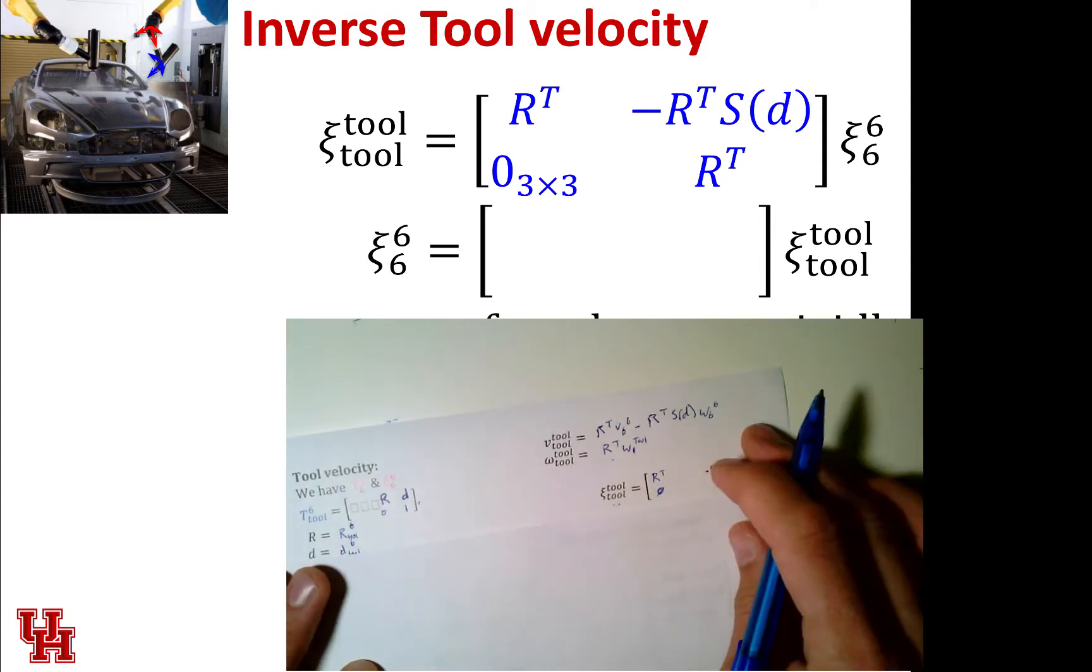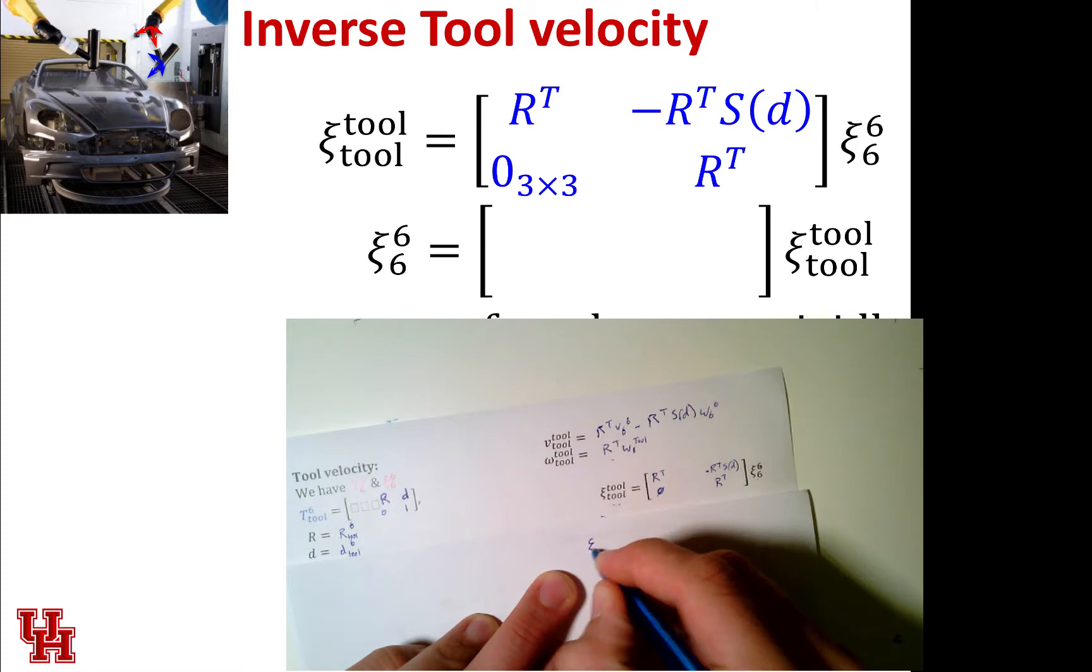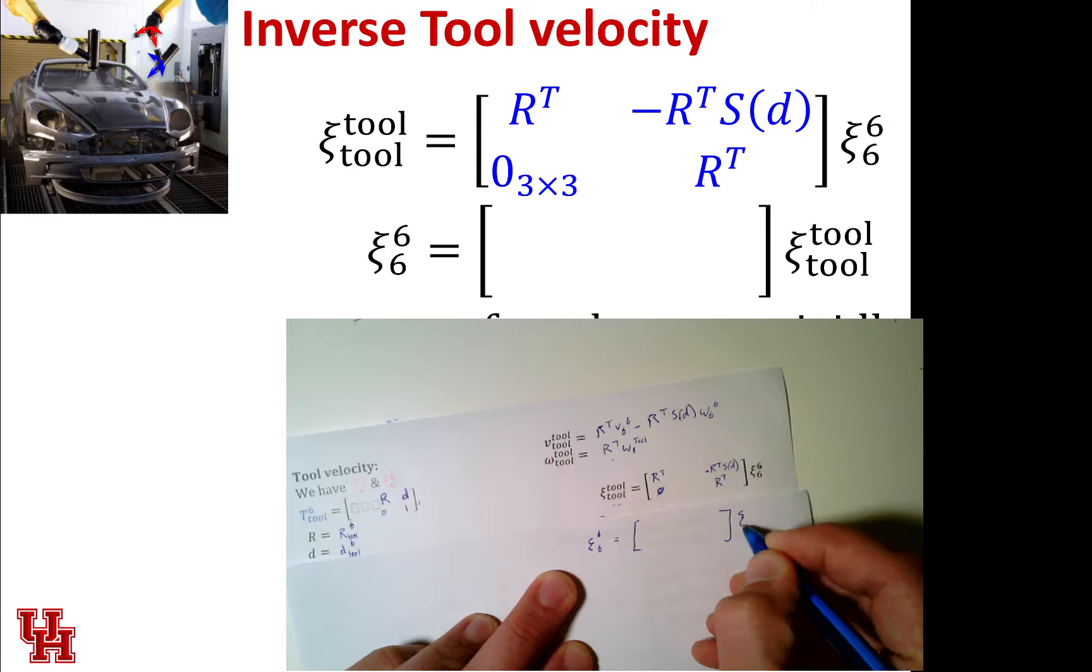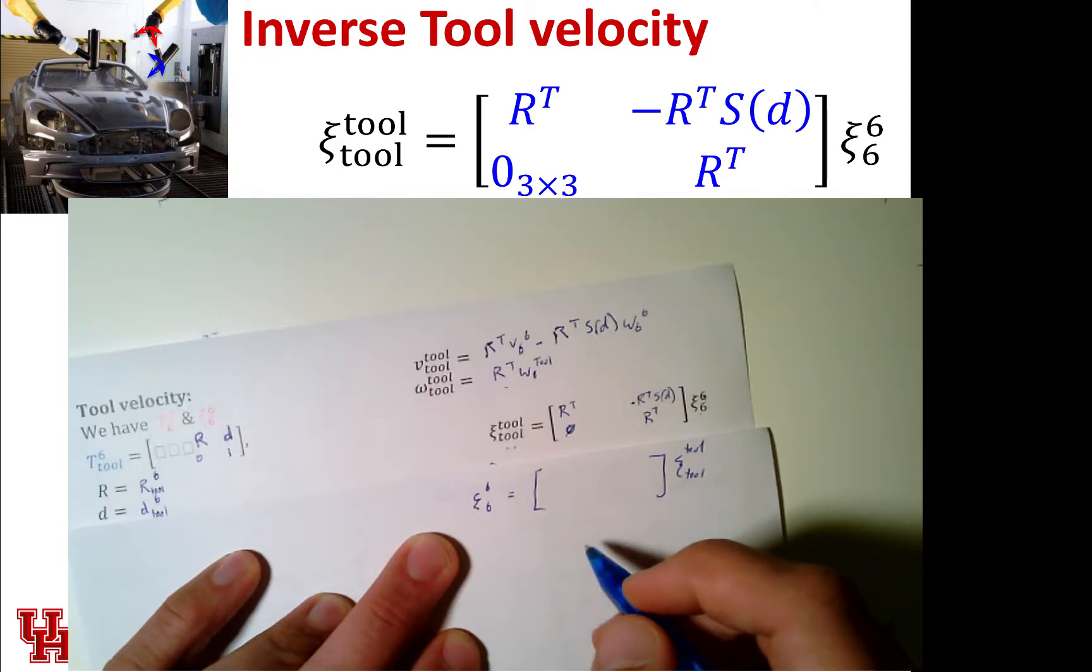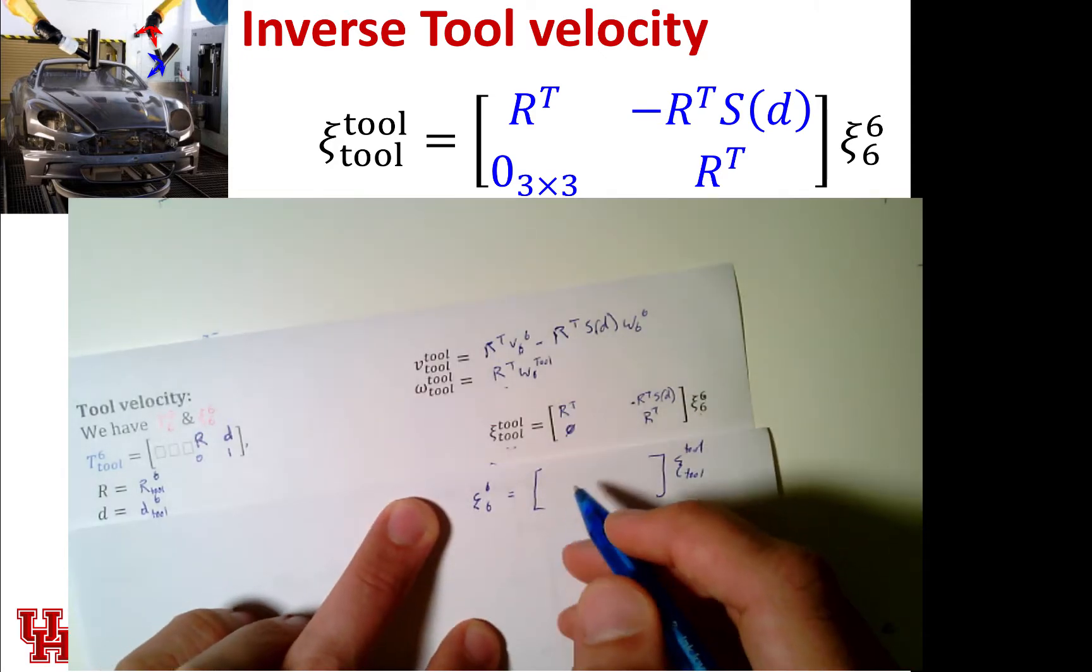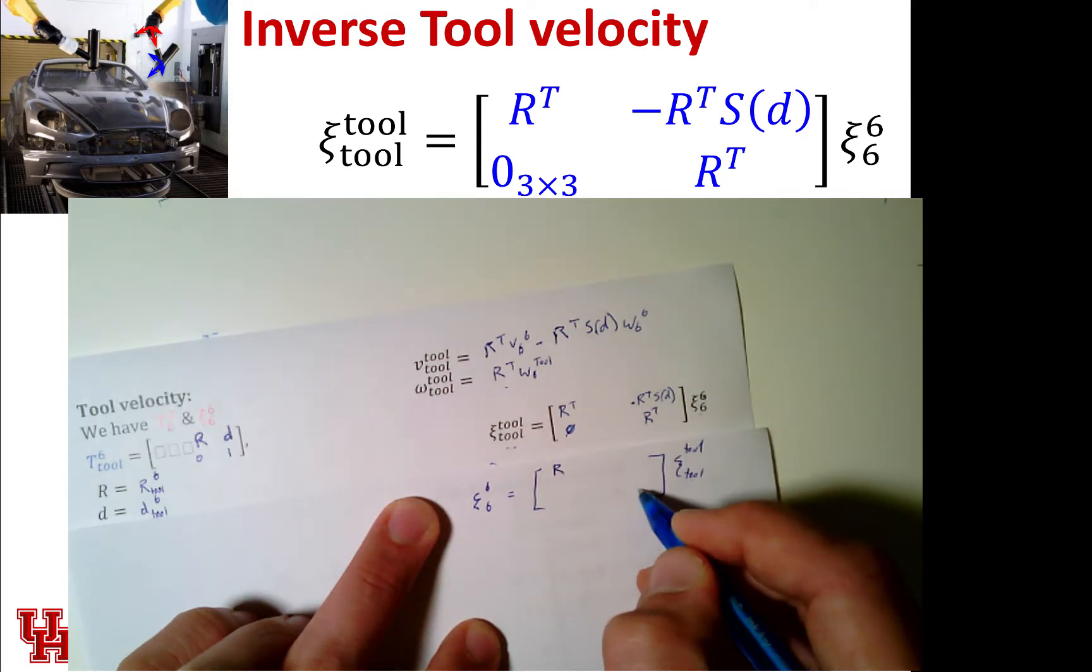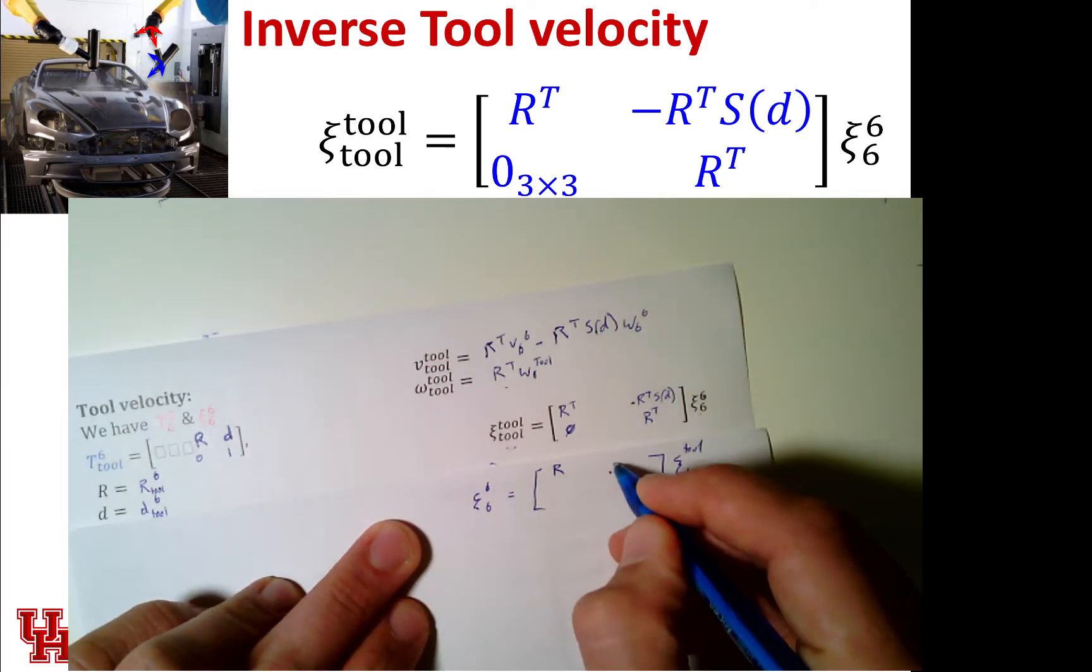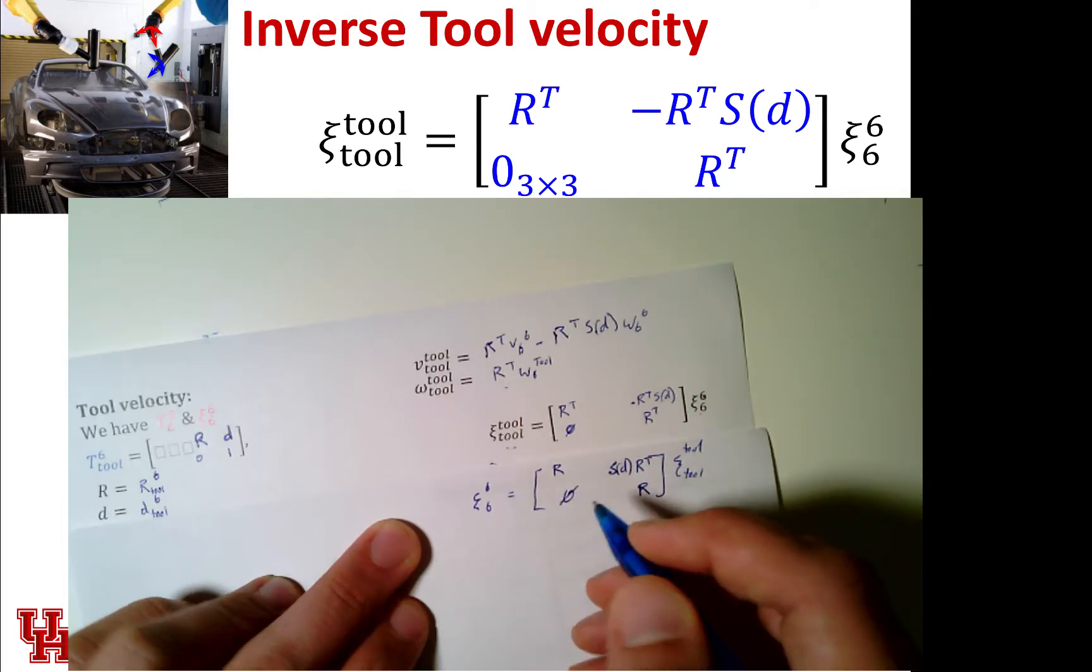We'd like to be able to invert that. So we'd like to invert this relationship. So what is psi 6 in frame 6? It's going to be some matrix times psi 2. Fortunately, this is a diagonal matrix. To find the inverse of the R, it's just going to be R. Inverse of this R is just going to be R. But our inverse of the matrix will be the negation of this. So S of D times R transposed. A zero vector there.